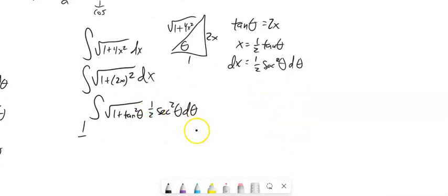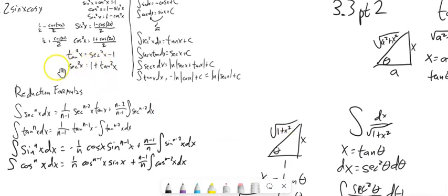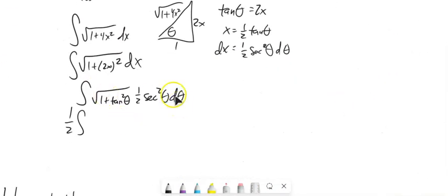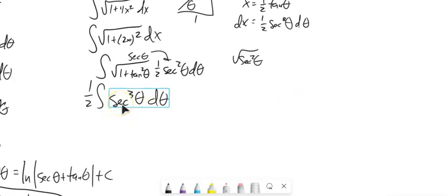I'll pull the 1/2 out. We know 1 + tan²θ = sec²θ, so we get the square root of sec²θ, which is sec θ. So in the integrand we've got sec θ times sec²θ, giving us sec³θ dθ. Let's think about evaluating this integral of sec³θ.